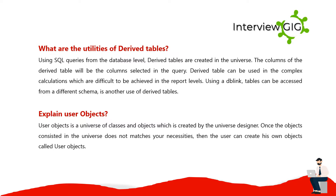What are the utilities of derived tables? Using SQL queries from the database level, derived tables are created in the universe. The columns of the derived table will be the columns selected in the query. Derived tables can be used in complex calculations which are difficult to achieve at the report level. Using a DB link, tables can be accessed from a different schema, which is another use of derived tables. User objects is a universe of classes and objects created by the universe designer. Once the objects in the universe do not match your requirements, the user can create his own objects called user objects.